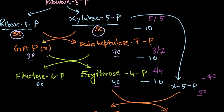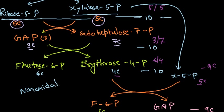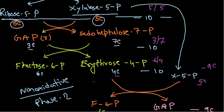Whatever process we have seen after this point is the non-oxidative phase, which is phase 2 of the hexose monophosphate shunt. This process is also termed the pentose phosphate pathway. That's kind of it, guys — I hope that's helpful. Thank you.